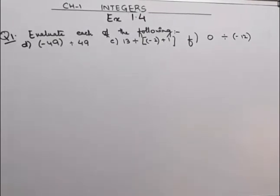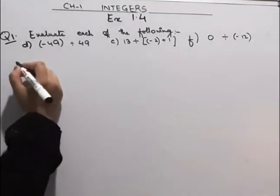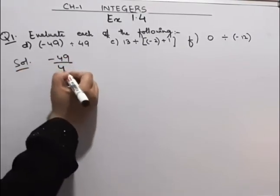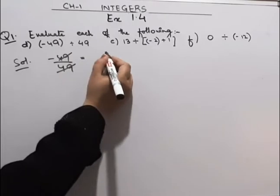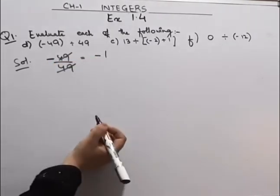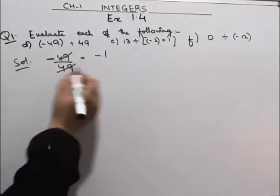Now starting with the D part. D part is minus 49 divided by 49. 49 will cancel with 49, we'll get 1, and we'll get this minus here. So we'll get the answer as minus 1.